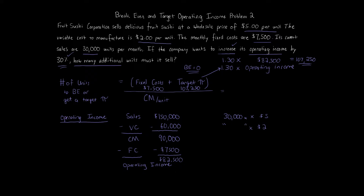The contribution margin per unit is the sales price per unit minus variable cost. Sales price is $5, variable cost is $2, so $5 minus $2 gives a contribution margin per unit of $3. Setting up the formula: $107,250 plus $7,500 equals $114,750, divided by the $3 contribution margin per unit. That gives us 38,250 units — the number of units required to increase operating income by 30%.